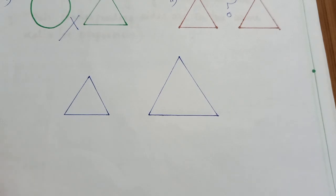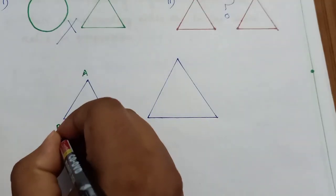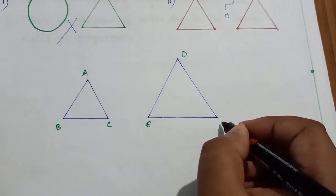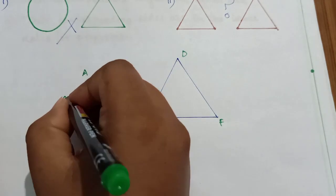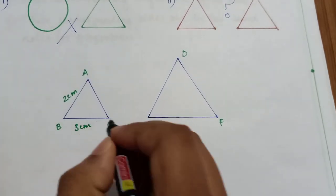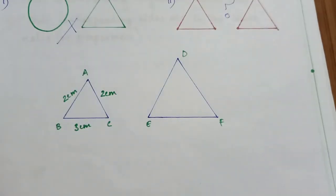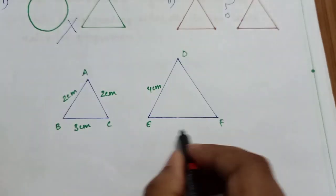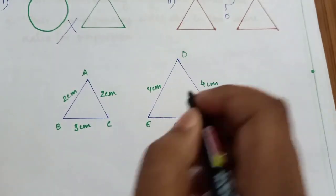Now let's do a triangle example. Suppose triangle ABC and triangle DEF. AB is equal to 2 centimeters, BC is equal to 3 centimeters, and AC is equal to 2 centimeters. Similarly, DE is equal to 4 centimeters, EF is equal to 6 centimeters, and DF is equal to 4 centimeters.